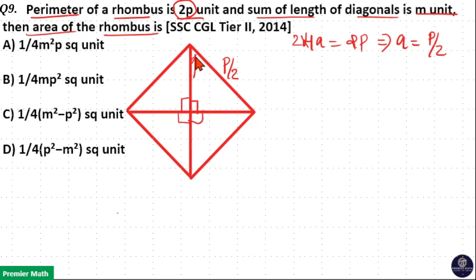Which means half of this diagonal is d1 by 2, and this half is equal to d2 by 2. Which means here this length, as per Pythagoras theorem, p by 2 the whole square is equal to d1 by 2 the whole square plus d2 by 2 the whole square.